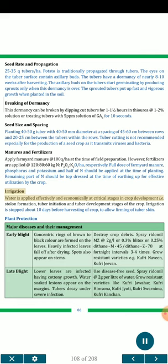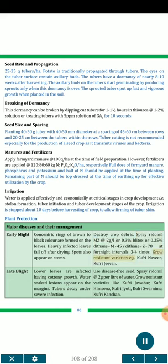Irrigation: Water is applied effectively and economically at critical stages in crop development — stolon formation, tuber initiation and tuber development stages. Irrigation is stopped about 10 days before harvesting to allow firming of tuber skin. Plant Protection — Major Diseases and their Management: Early Blight — concentric rings of brown to black color are formed on the leaves; heavily infected leaves fall off after drying; spots also appear on stems. Destroy crop debris; spray Ridomil MZ at 2 g/L, or Blitox 0.25%, or Dithane M45, or Dithane Z78 at fortnightly intervals, 3–4 times. Grow resistant varieties e.g., Kufri Naveen, Kufri Jeevan. Late Blight — lower leaves infected with cottony growth; water-soaked lesions appear on the margins; tubers decay under severe infection. Use disease-free seed; spray Ridomil at 2 g/L. Grow resistant varieties like Kufri Jawahar, Kufri Himsona, Kufri Jyoti, Kufri Swarnima, Kufri Kanchan.